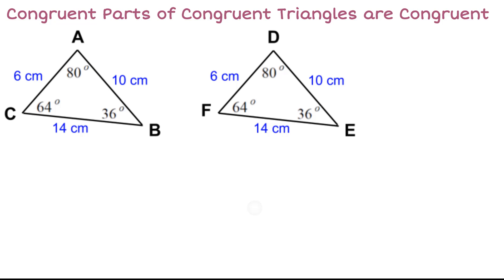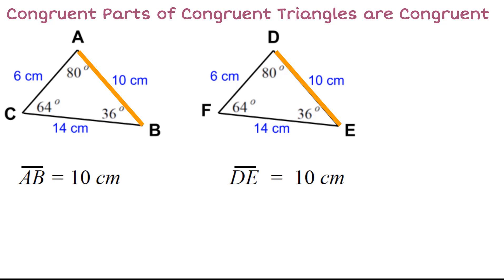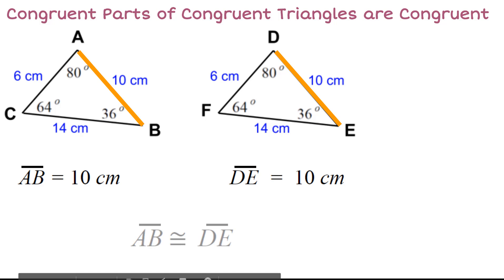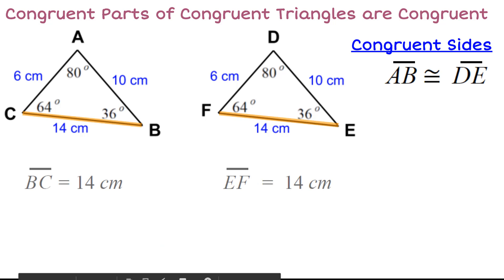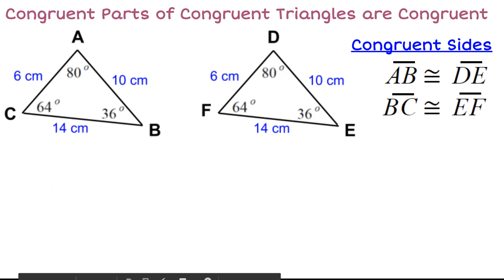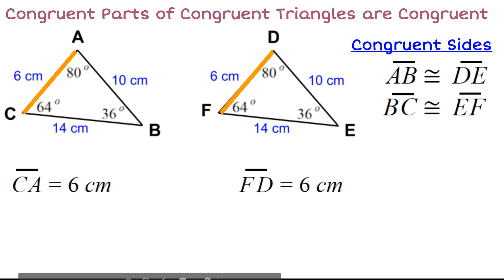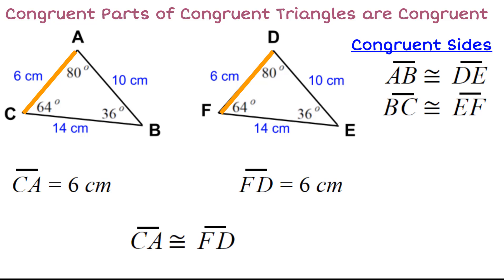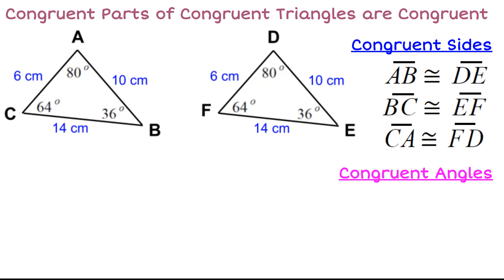Let's talk more about congruent parts of congruent triangles. Side AB equals 10 centimeters and side DE is also 10 centimeters, so side AB is congruent to side DE. Side BC measures 14 centimeters and side EF measures 14 centimeters, so side BC is congruent to side EF. Side CA is 6 centimeters long and side FD is 6 centimeters long, so side CA is congruent to side FD.